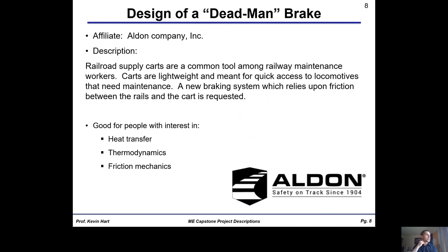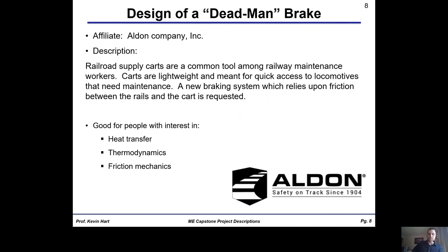Alden also has another project: the redesign of a braking system for one of their mobile maintenance railway carts. Maintenance workers need to get around tracks quickly using these mobile carts, but the current braking system is just suboptimal. They want to redesign it to be more of a friction braking system that leverages friction against the rails to slow the cart down. This is an interesting project if you're into friction mechanics, heat transfer, thermodynamics, and railways.